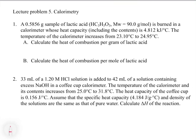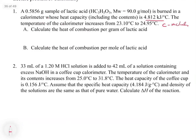Now we have to interpret this question to see what type of problem it is. It says the heat capacity — not specific heat capacity — including the contents, is 4.812 kilojoules per degree Celsius. That's a big C, and it includes the calorimeter, the water, and everything in it. So we know we're going to use: minus Q of the reaction equals big C times delta T, because this single heat capacity includes everything inside the calorimeter.